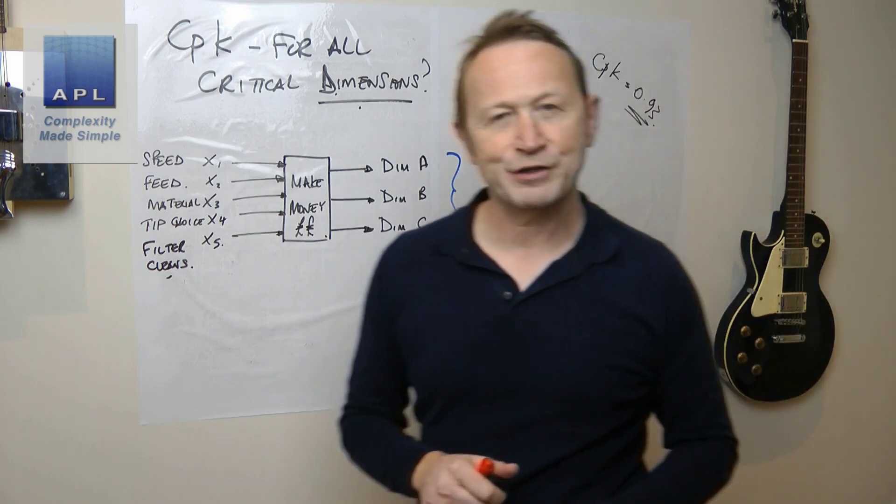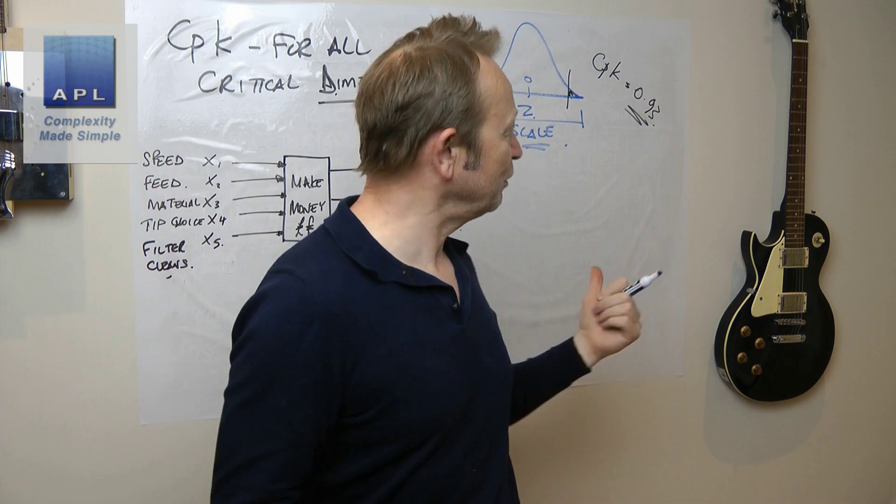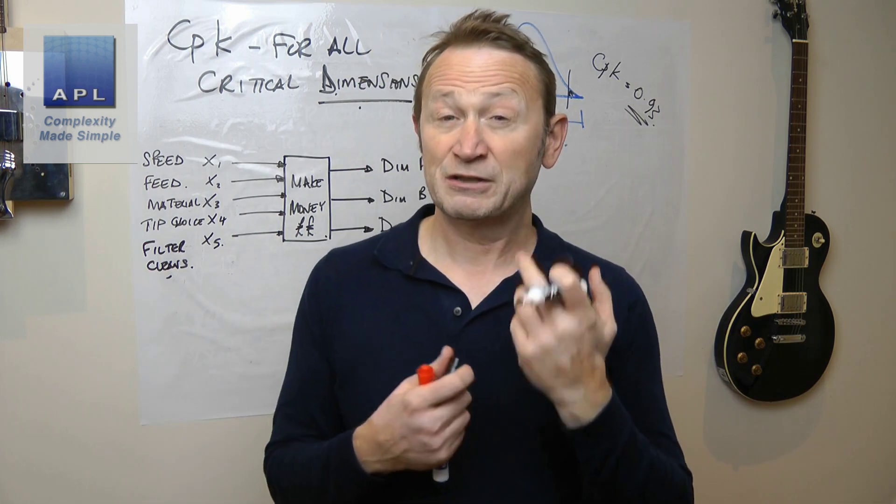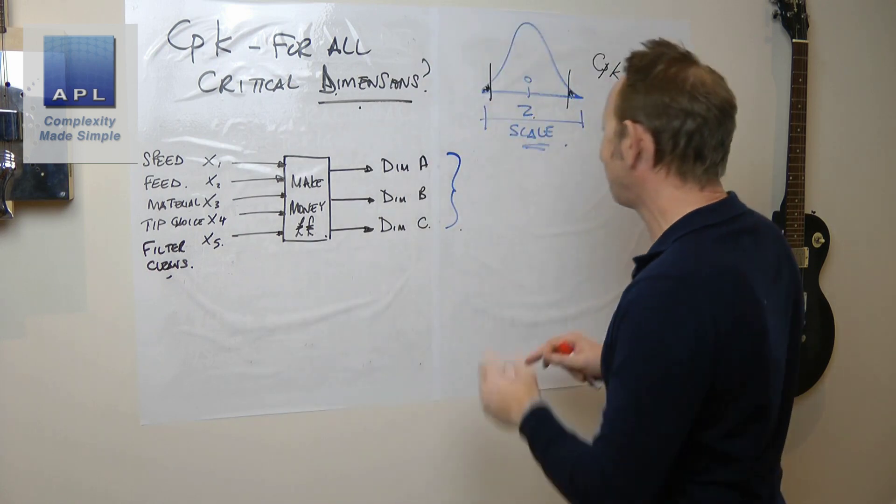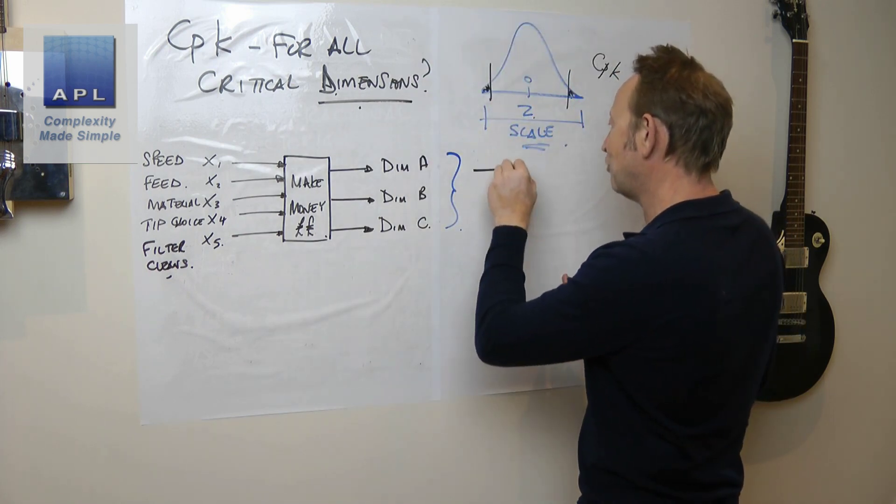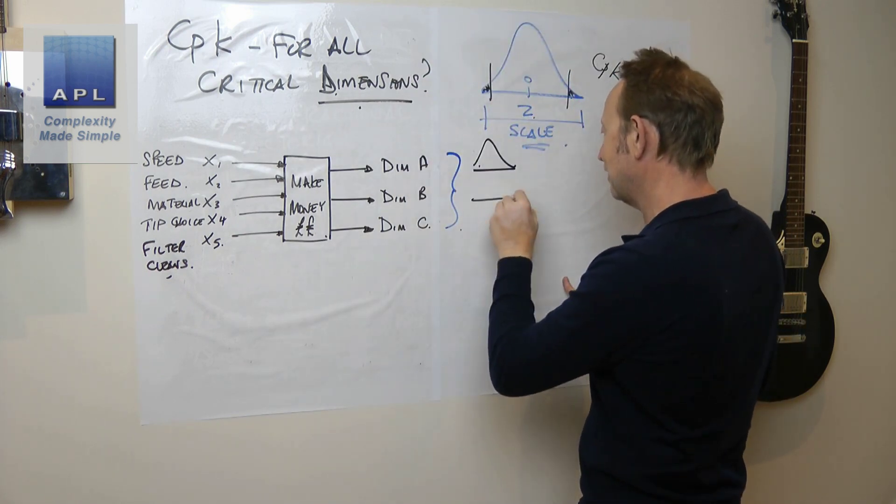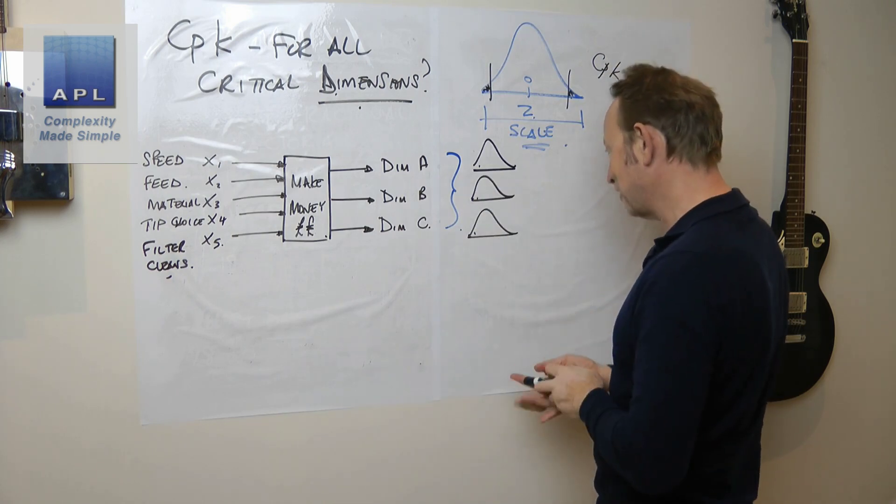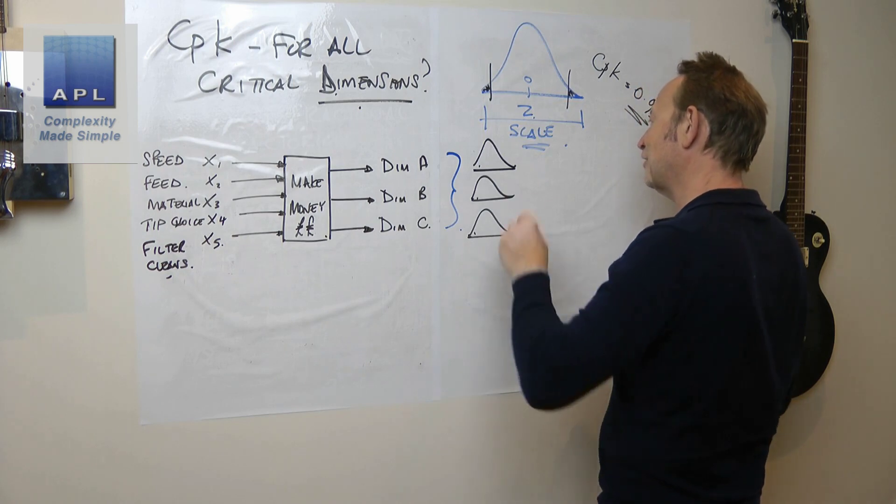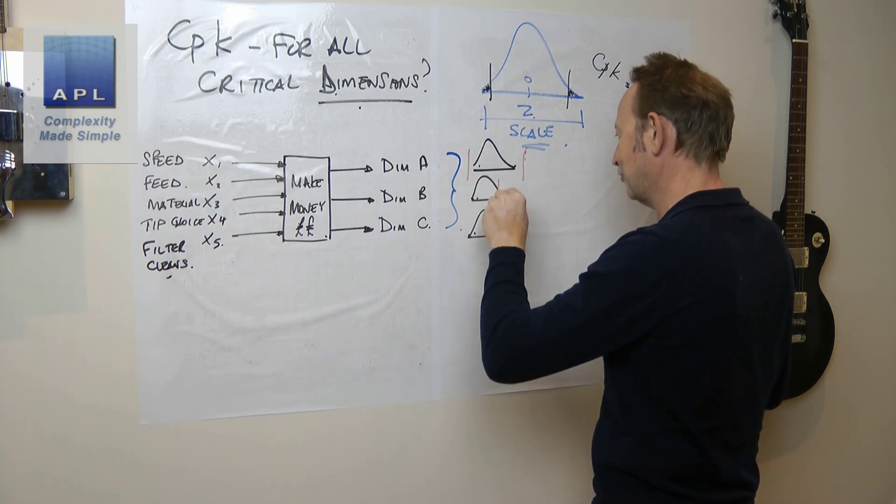If you did that and said 'now I've got a problem,' what's the next question you'd ask? 'Which dimension's giving me the problem - is it A, B, or C?' So you'd then look at the individual CPKs.